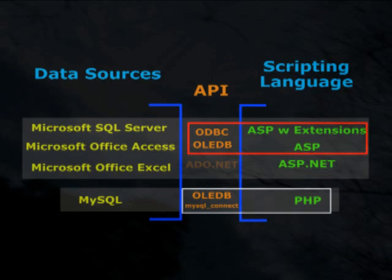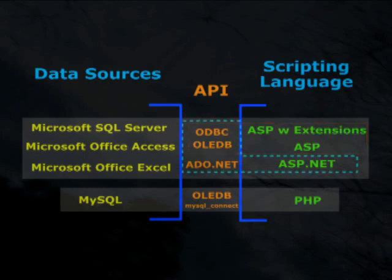The youngest of the bunch are the ADO.NET providers, specifically designed for use with the ASP.NET scripting language. ASP.NET can also utilize the ODBC driver or OLEDB provider. It's a lot to wrap your brain around. So why is all of this important? Well, it's these APIs that will make up the first half of the line of code called a connection string that will be used to make the connection to the data source.